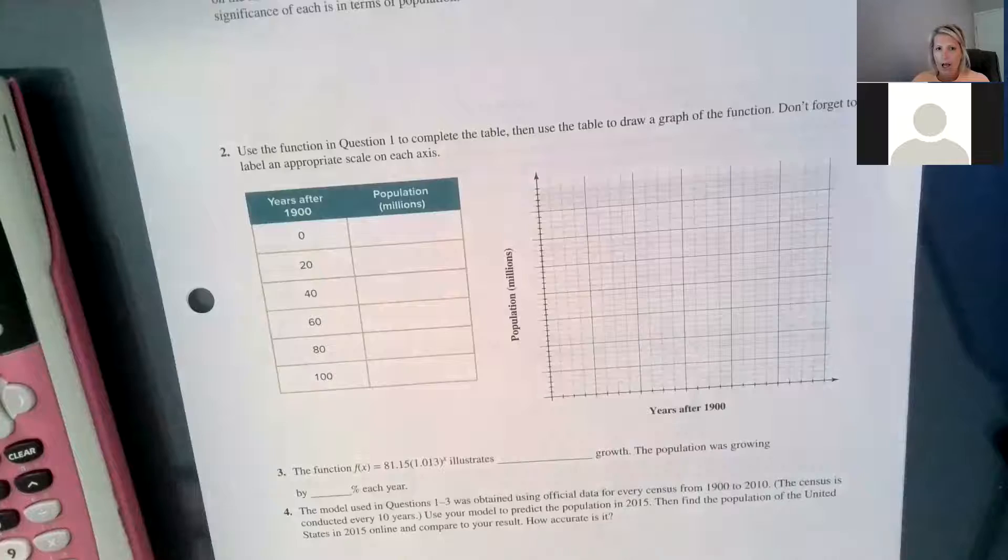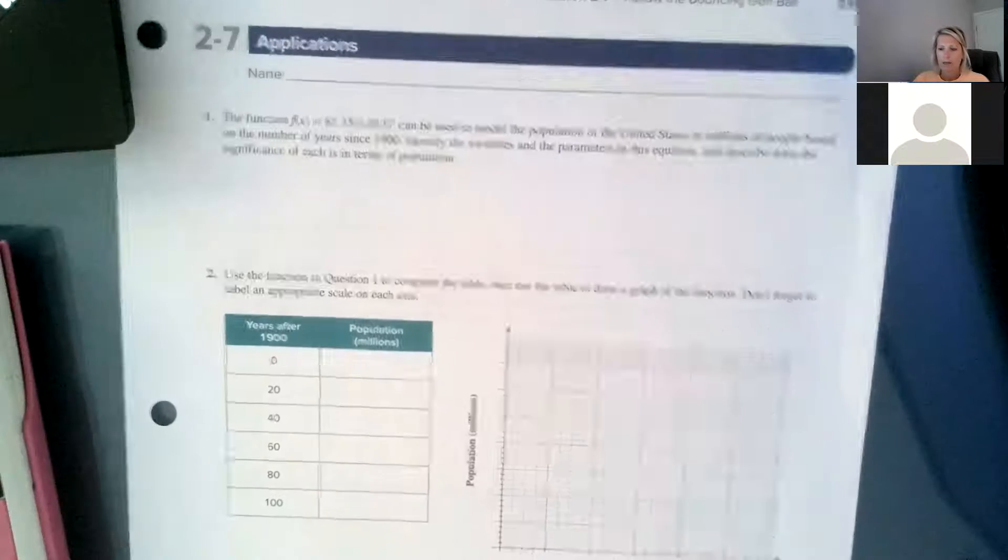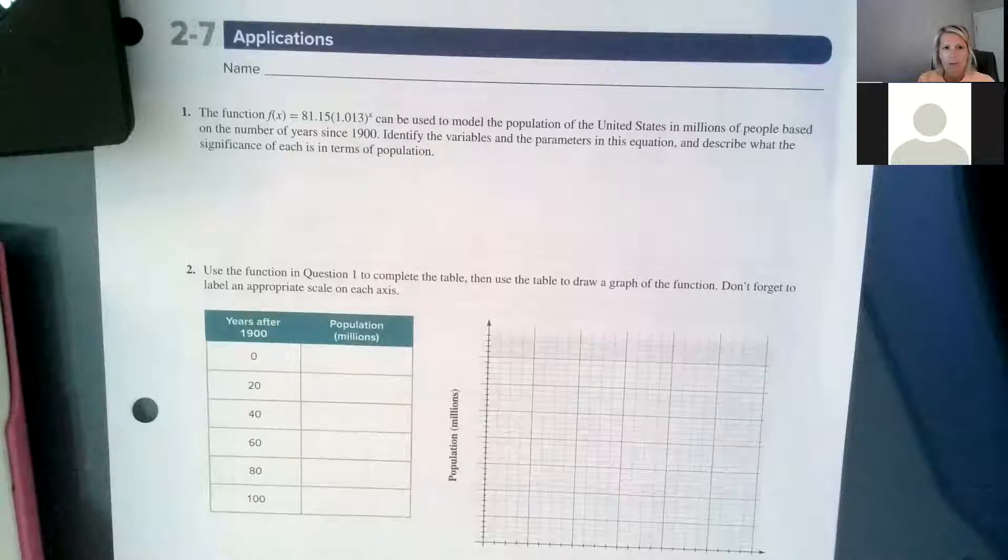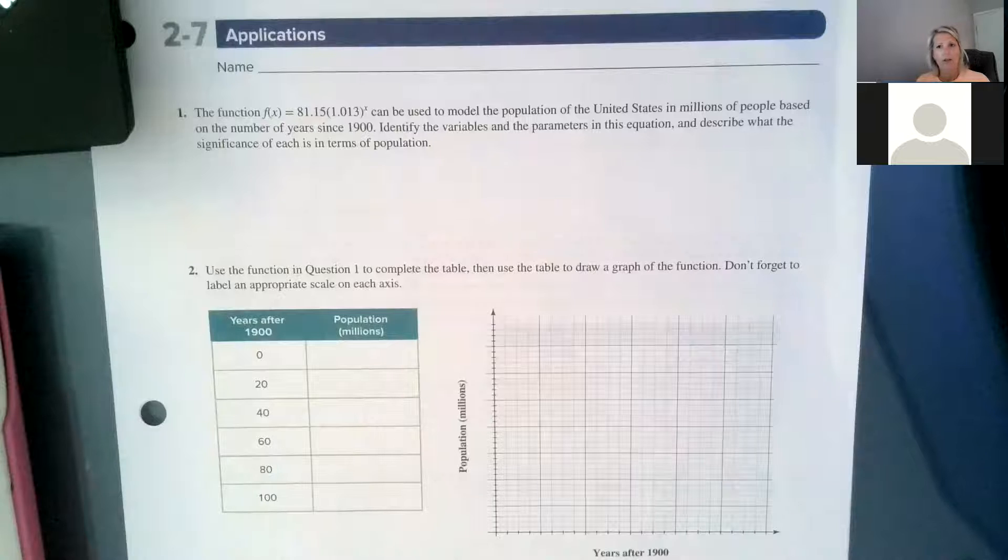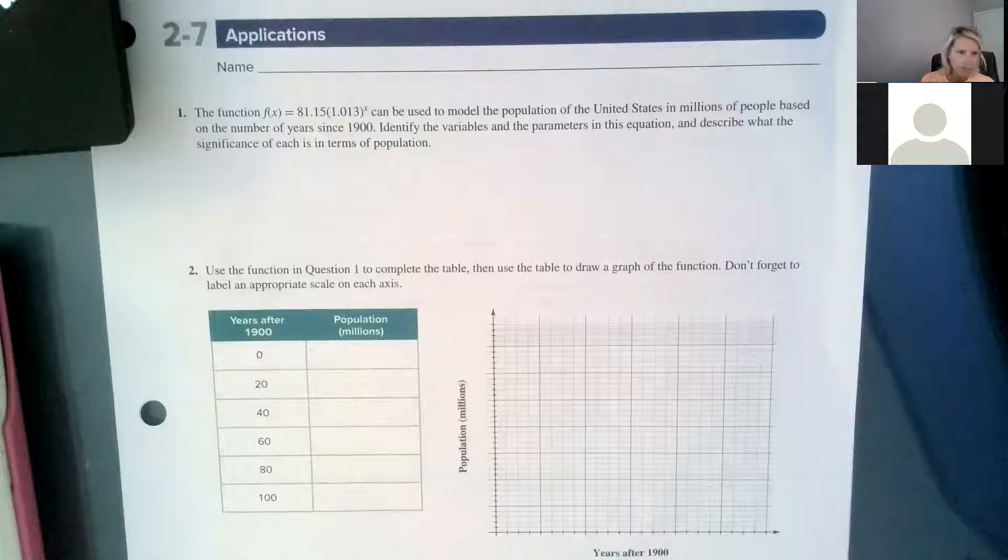Okay, hello. We are going to work on lesson 2.7 this morning, and it is following the bouncing golf ball, but we're not actually doing any of those examples. We're going to jump to the application section on page 235, and we are going to do a big example of exponential modeling. We're going to continue learning about exponential growth, the y-intercept starting value, the growth rate, and the growth factor so that you can put it all together with your worksheets.